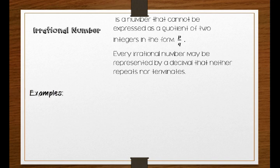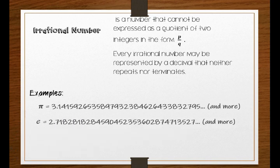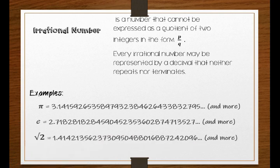Examples: we have numbers which are familiar to us. One is π which equals 3.14159 and so on. Next is E or the Euler number which equals 2.718 and so on. Last is square root of 2 which equals 1.414213 and so on. So all numbers that do not repeat or terminate are irrational numbers.